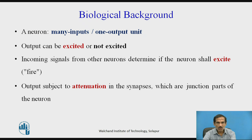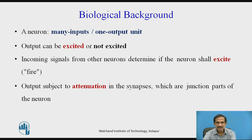A neuron has many inputs but one output unit. The output can be excited or non-excited. The incoming signals from other neurons determine if a neuron is excited at a particular time — this is also called the firing of that neuron. The output is subject to attenuation in the synapse, which are the junction parts of a neuron.